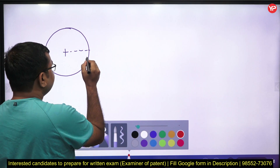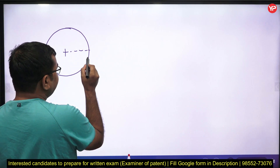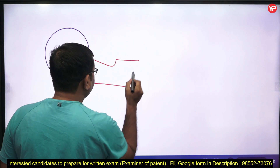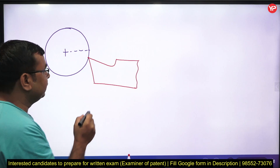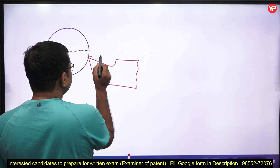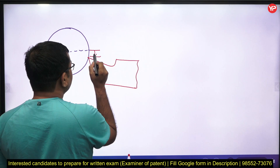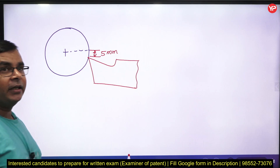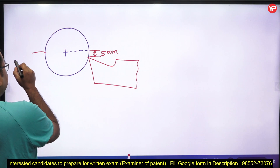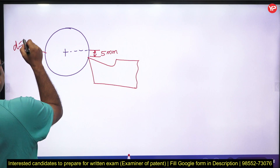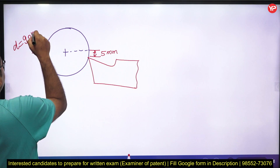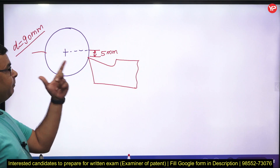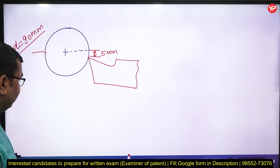This is the point at which our tool is set, and this is our turning tool. We set the tool below the centerline, and this gap is already given as 5 millimeters. The diameter of the workpiece is 90 millimeters. So what will happen to the tool geometry?